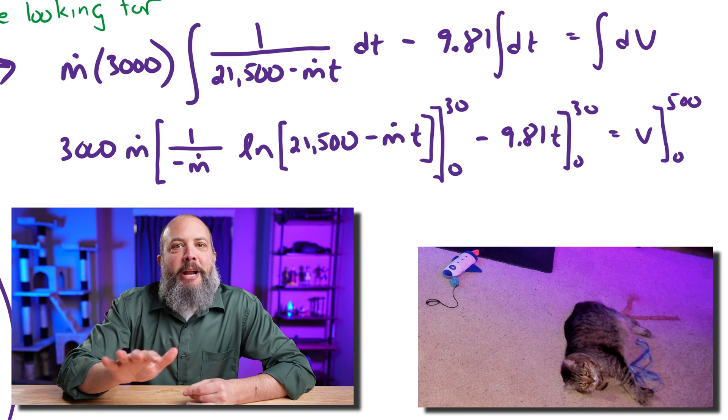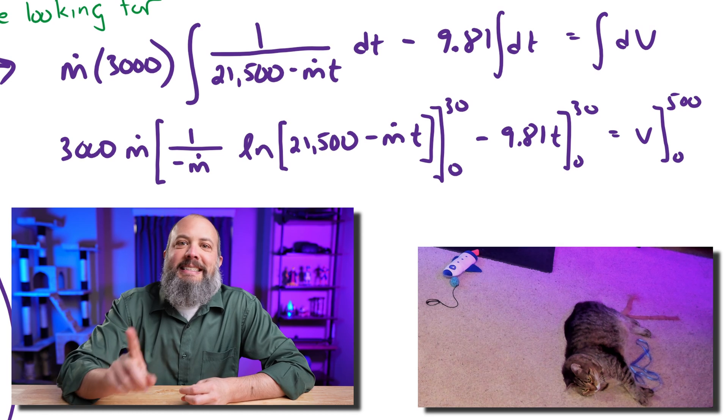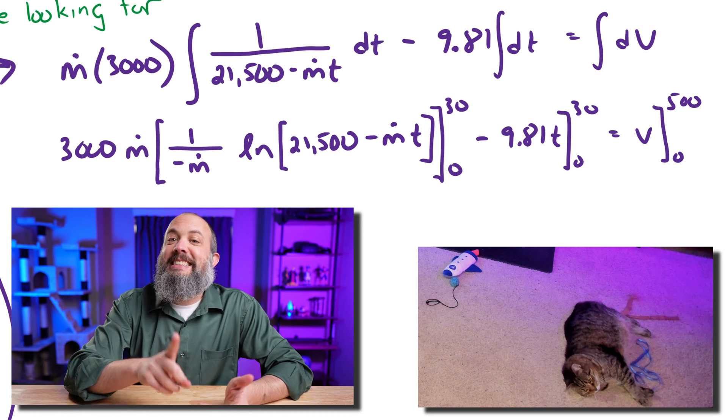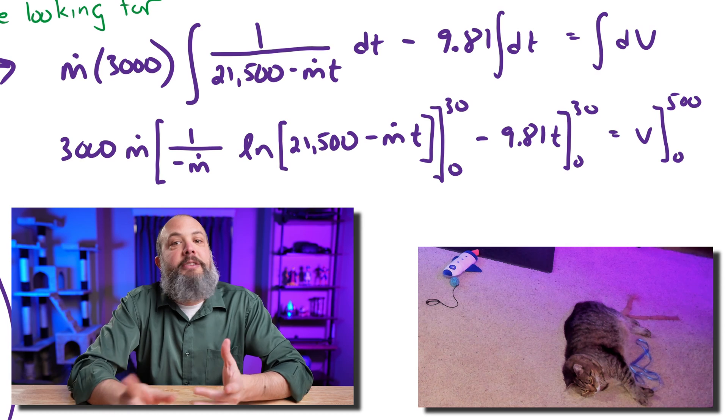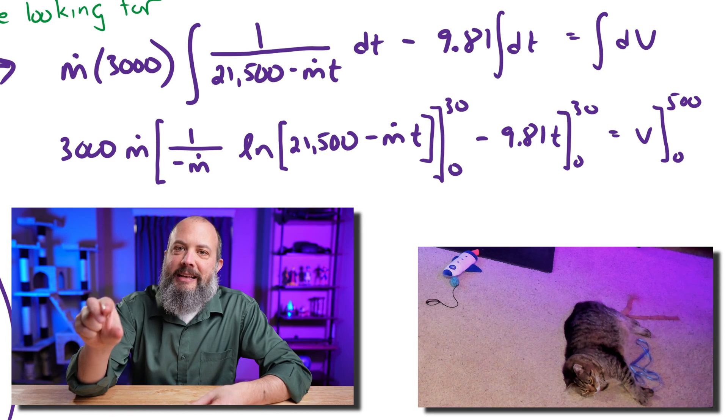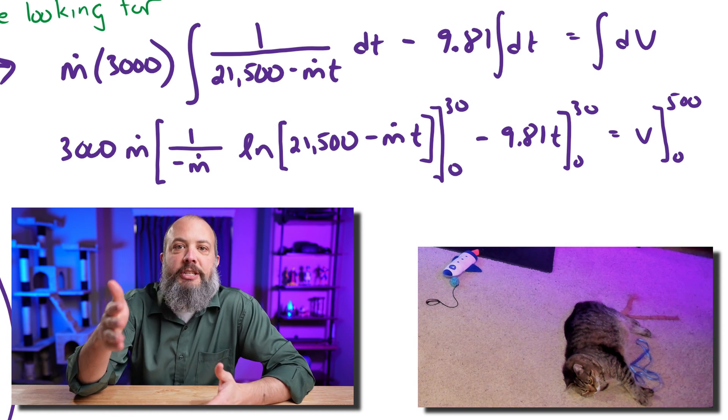For the 9.81 integral of dt, that's the integral of 1 dt. So the integral of 1 is just t when it's an integral with respect to time. And now the bounds of integration for time were from 0 to 30, the 30 seconds being the maximum time.